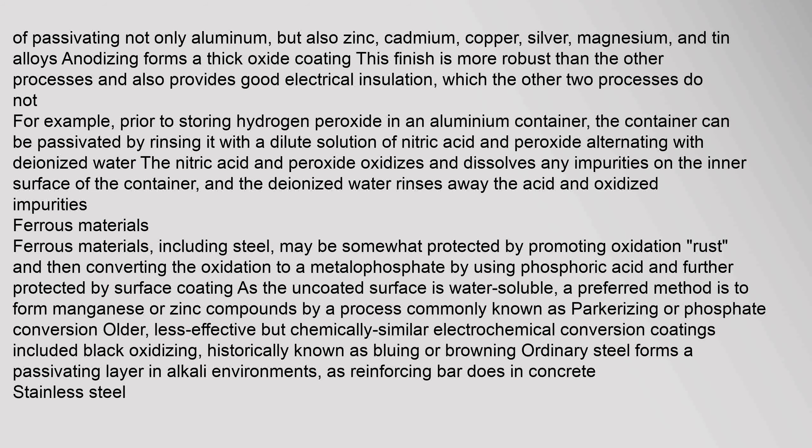Ferrous materials, including steel, may be somewhat protected by promoting oxidation and then converting the oxidation to a metallophosphate by using phosphoric acid, and further protected by surface coating, as the uncoated surface is water-soluble. A preferred method is to form manganese or zinc compounds by a process commonly known as parkerizing or phosphate conversion. Older, less effective but chemically similar electrochemical conversion coatings included black oxidizing, historically known as bluing or browning. Ordinary steel forms a passivating layer in alkali environments, as reinforcing bar does in concrete.